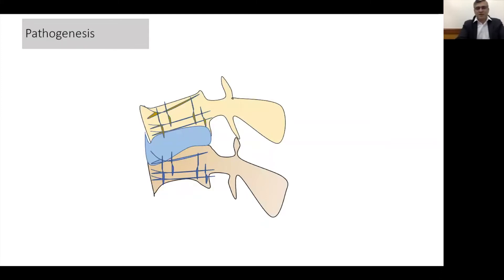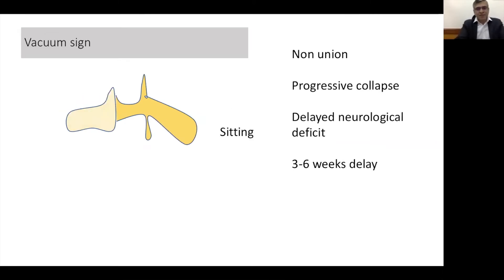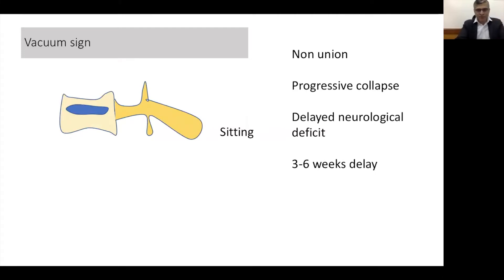When we look at these fractures, are they the same as any other fractures? If you look at an osteoporotic fracture, because of the loss of trabecular pattern, there is always a vacuum created. Such a fracture in the supine position will demonstrate this vacuum, but as the patient sits, the fracture tends to collapse, and height is restored as the patient goes back to the supine position. This phenomenon of collapse and restoration will keep repeating until the fracture eventually collapses into a vertebra plana, or a burst fracture causing a delayed neurological deficit, usually presenting after four to six weeks.